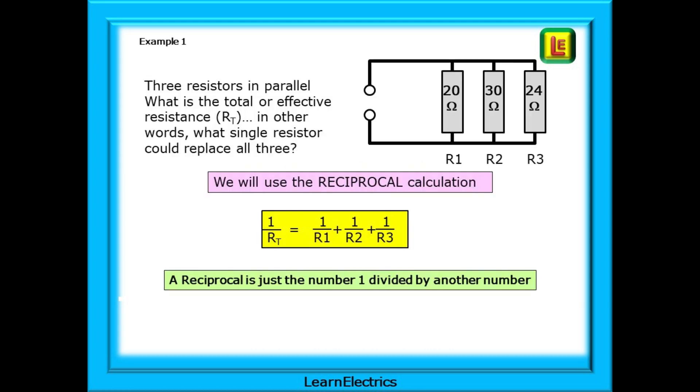Let's start with this one. Three resistors are in parallel. What is the total or effective resistance, RT? In other words, what single resistor could replace all three? We are given the values of each resistor. A reciprocal is just the number one divided by another number. So here, one divided by the total resistance is equal to the sum of each of the resistances divided into one.